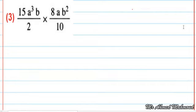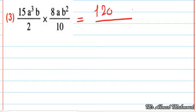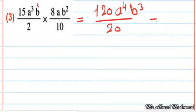Next example: 15a power 3, b over 2, multiplied by 8a, b power 2 over 10. We join them into one fraction. Numerator: 15 times 8 equals 120, a power 3 times a equals a power 4, b power 1 times b power 2 equals b power 3. Denominator: 2 times 10 equals 20. Then 120 divided by 20 equals 6. The final answer is 6a power 4, b power 3.